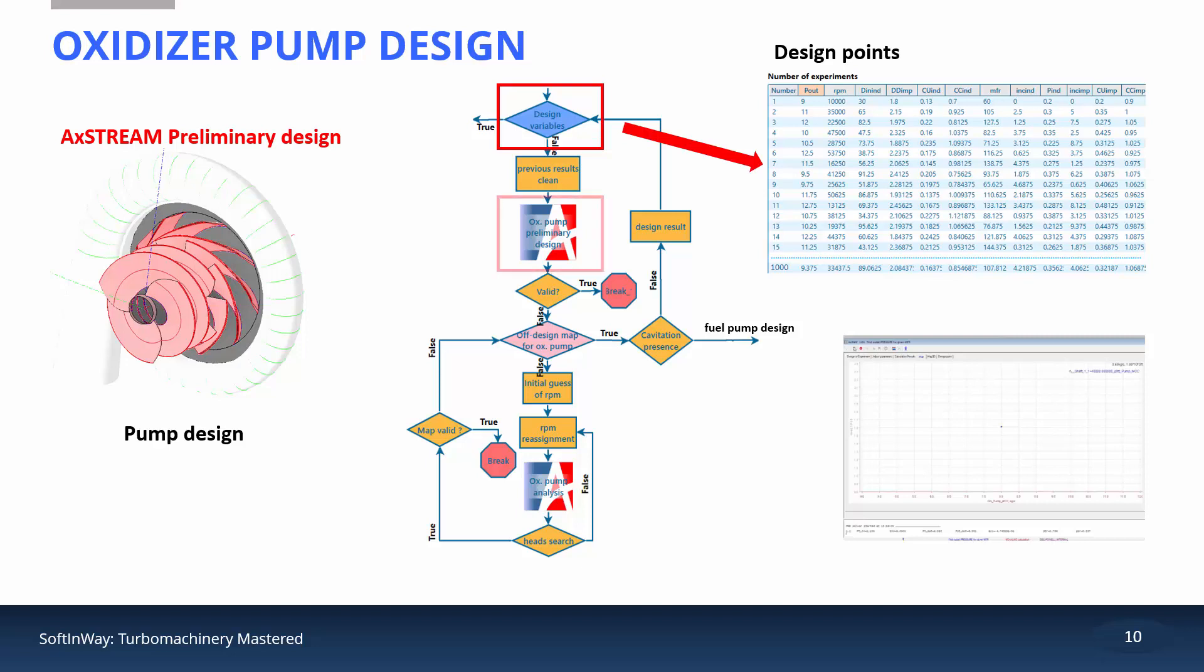If the solver was not able to design a pump for these conditions, or the design is out of the constraints limit, then no further work is done for the current data set, and a new set of boundary conditions from the Monte Carlo block is used for the next design iteration. If the design procedure is successful, the pump geometry is then used to perform off-design calculations for a given inlet pressure and mass flow rate.